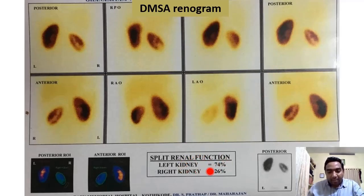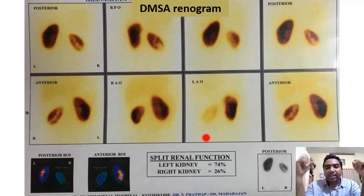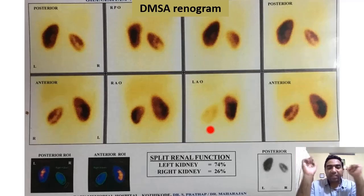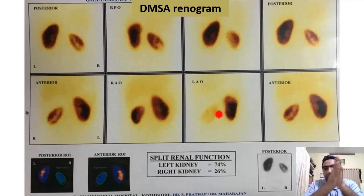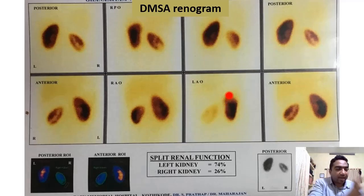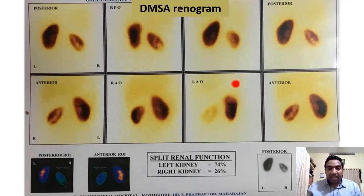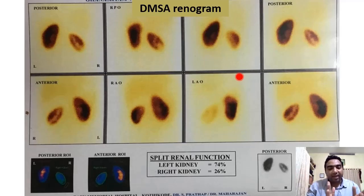The DMSA renogram also gives a mathematical assessment — called split renal function — showing how each kidney contributes to total renal function. Ideally the split renal function should be 50% for each kidney. If the left kidney shows 74% and the right kidney 26%, this does not mean the left kidney is functioning more — it means the left kidney contributes 74% of total renal function. It does not mean both kidneys are functioning well; total renal function must be determined from renal function tests.